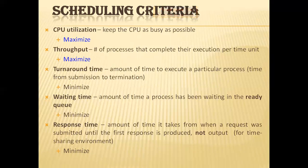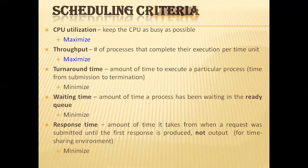Fifth is response time: in an interactive system, turnaround time may not be the best criterion. Often a process can produce some output fairly early and can continue computing new results while previous results are being output to the user. Another measure is the time from submission of a request until the first response is produced — this is called response time. It is the time it takes to start responding, not the time it takes to output the full response. Turnaround time is generally limited by the speed of the output device.